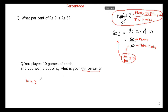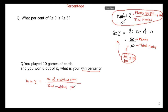Yes sir. Win percentage equals to number of matches won upon total matches played, into 100 — isn't it? Yes sir. So the formula is: win percentage = number of matches won / total matches played × 100.